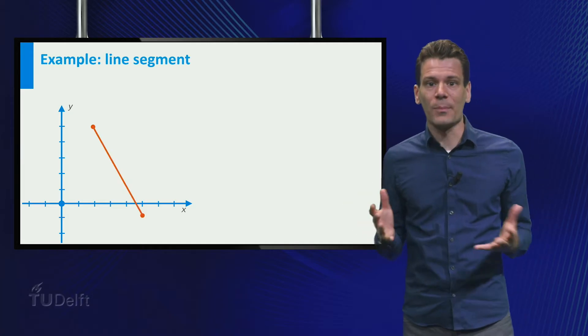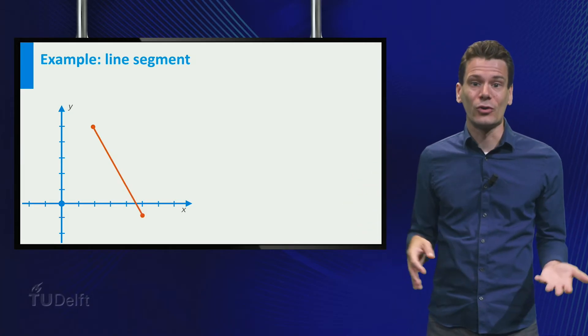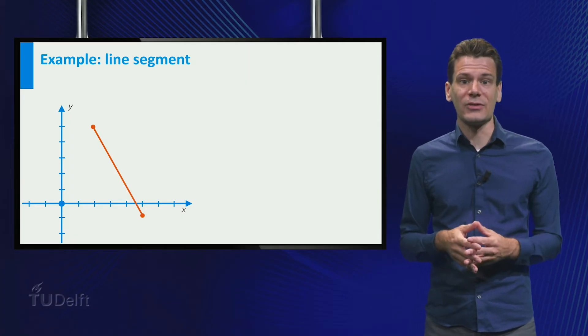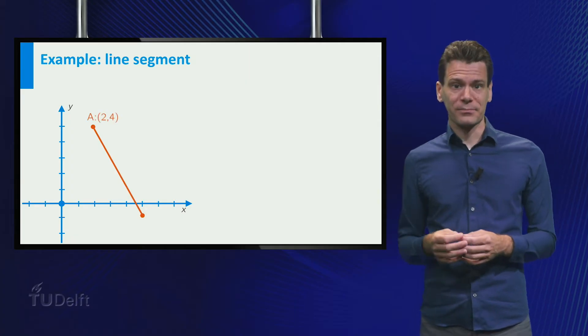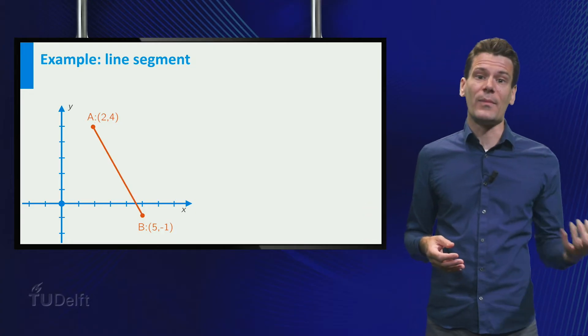Okay, let's try to apply the whole setup to another curve, a line segment. More concretely, suppose that a line segment has endpoints A and B in the plane with coordinates (2,4) and (5,-1) respectively.